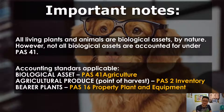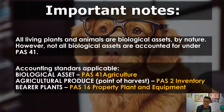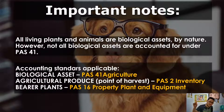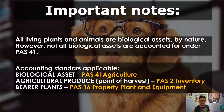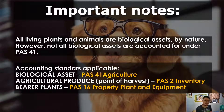While the chicken is growing, it's PAS 41. But when you harvest the meat of the chicken, it becomes PAS 2. While the fruit is growing on the tree, that's still PAS 41. But once you harvest it, it's PAS 2. That is the importance of the point of harvest — always take note of when it was harvested.